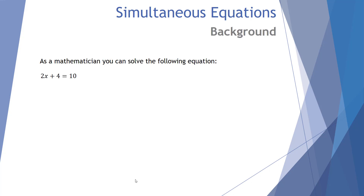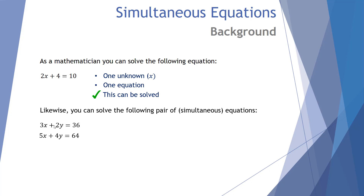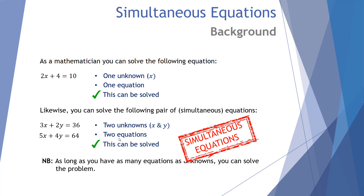A bit of background first of all. As a mathematician you can solve the equation 2x plus 4 equals 10 — we've got one unknown and one equation, so this can be solved. Likewise, we can solve two equations because we've got two unknowns, x and y, and two equations. The general rule is: as long as you have as many equations as unknowns, you can solve the problem.